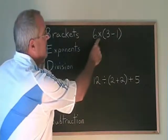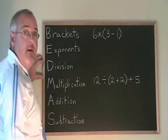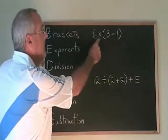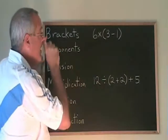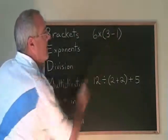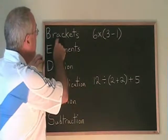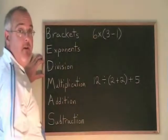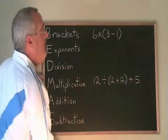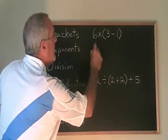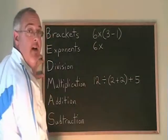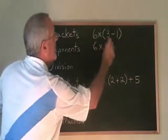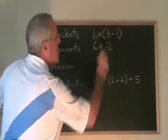Here we have a multiplication and a subtraction. Normally we would have to do the multiplication first. But because there's a bracket around the 3 minus 1 and bracket comes ahead of multiplication in BEDMAS, we're doing the bracket first. We're going to do 3 minus 1 first. So the 6 times gets copied down and the answer to 3 minus 1, which is 2, gets written here in place of the bracket.